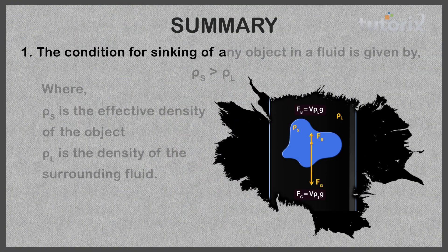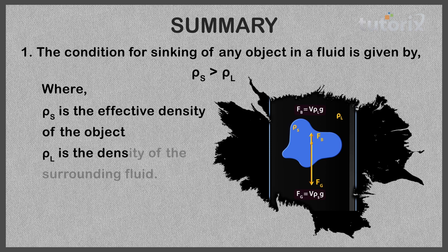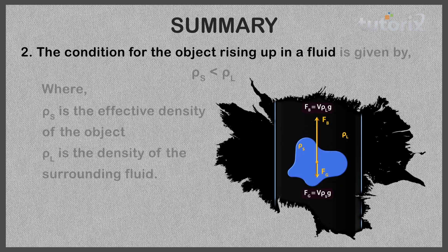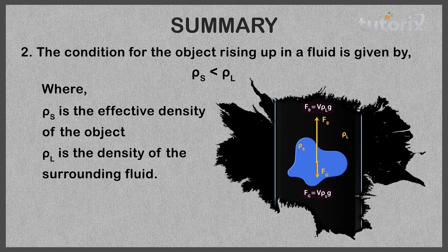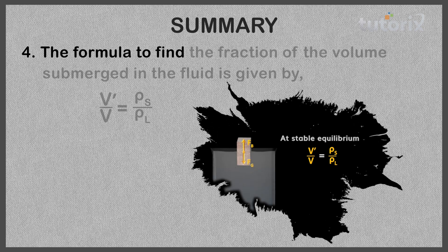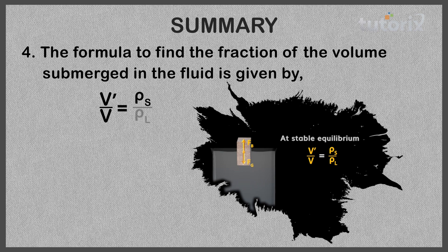Let's do our recap. The condition for sinking of any object in a fluid is ρS > ρL, where ρS is the effective density of the object and ρL is the density of the surrounding fluid. The condition for the object rising up in a fluid is ρS < ρL. If an object rises up in a fluid, it will rise to the surface and achieve equilibrium with a portion of its volume submerged. The formula to find the fraction of the volume submerged is V'/V = ρS / ρL.